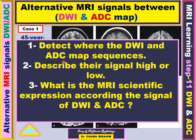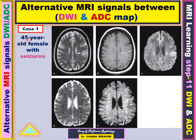For every case, we should detect where is the diffusion-weighted image and ADC map from the different MRI sequences, and then describe the signal within these two specific MRI sequences — whether it is high or low — and then determine the clinical significance. Case 1 is a 45-year-old female with seizure. To answer the first question, you should detect the ADC and diffusion-weighted image.